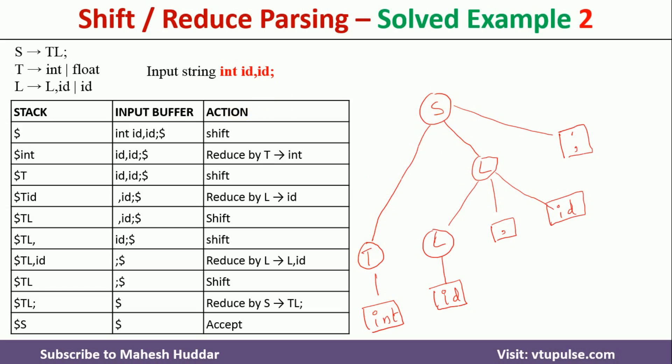This is a very simple process we can follow to check whether the input string is valid or not with respect to shift-reduce parsing and the given grammar. This is solved example number 2. The link for other solved examples is given in the description below — do follow those links to understand more numericals on shift-reduce parsing. I hope you understood the concept. If you like the video, do like and share with your friends. Press the subscribe button for more videos and the bell icon for regular updates. Thank you for watching.